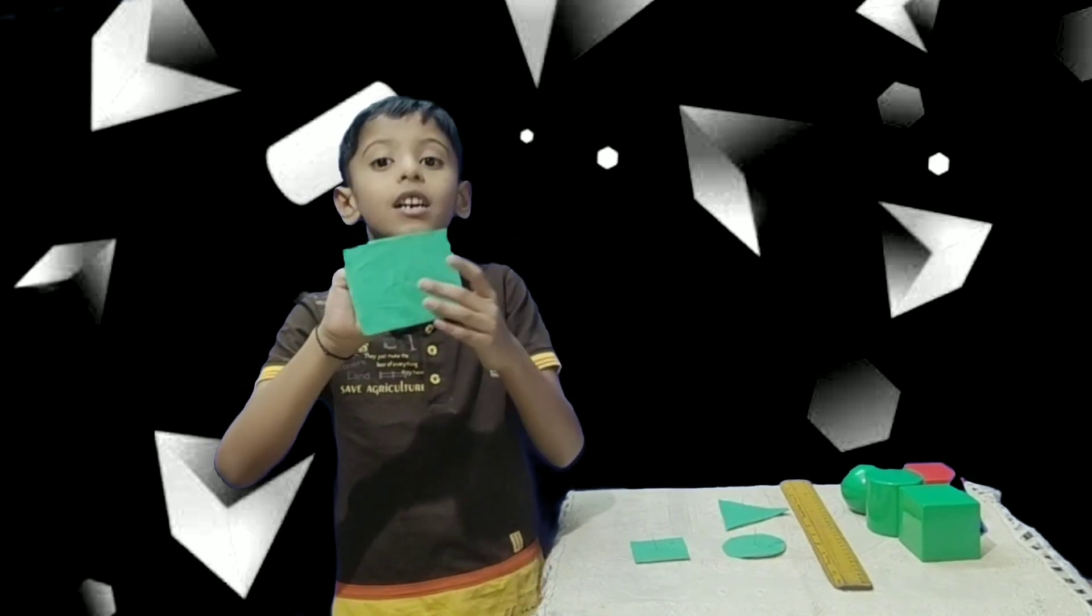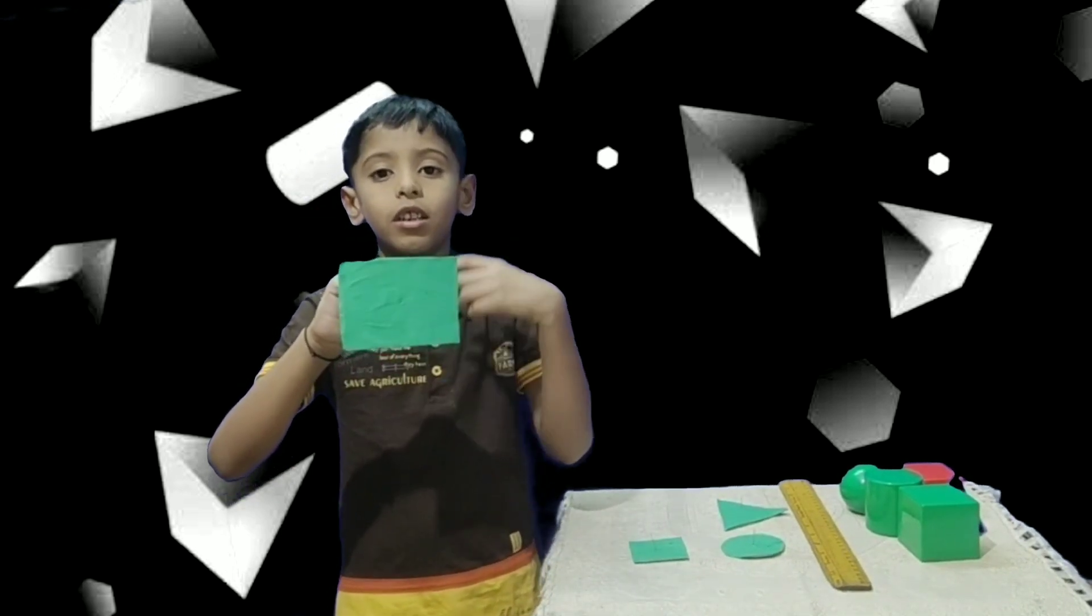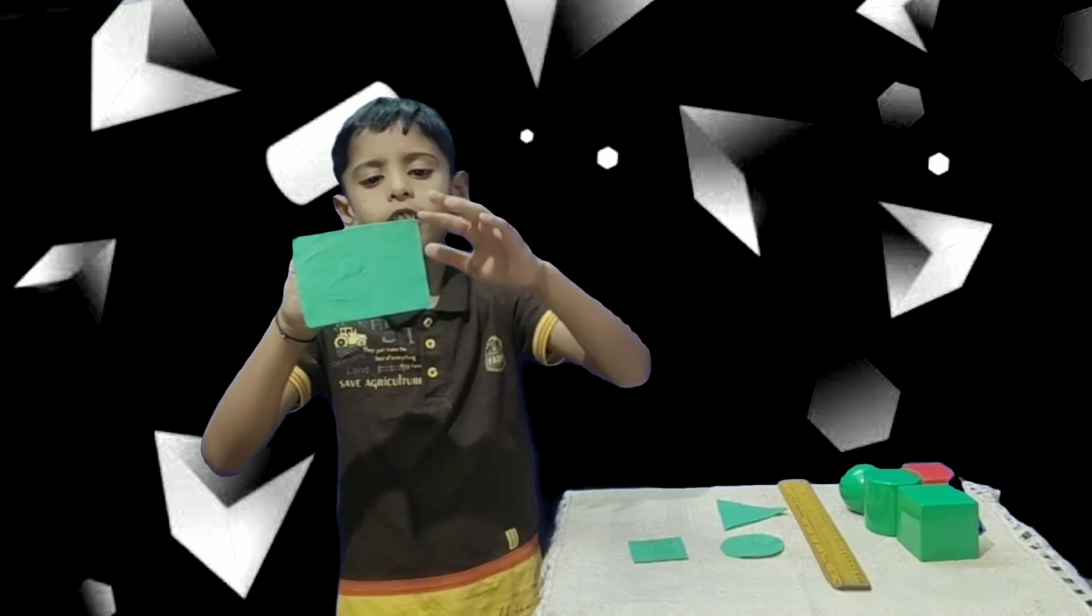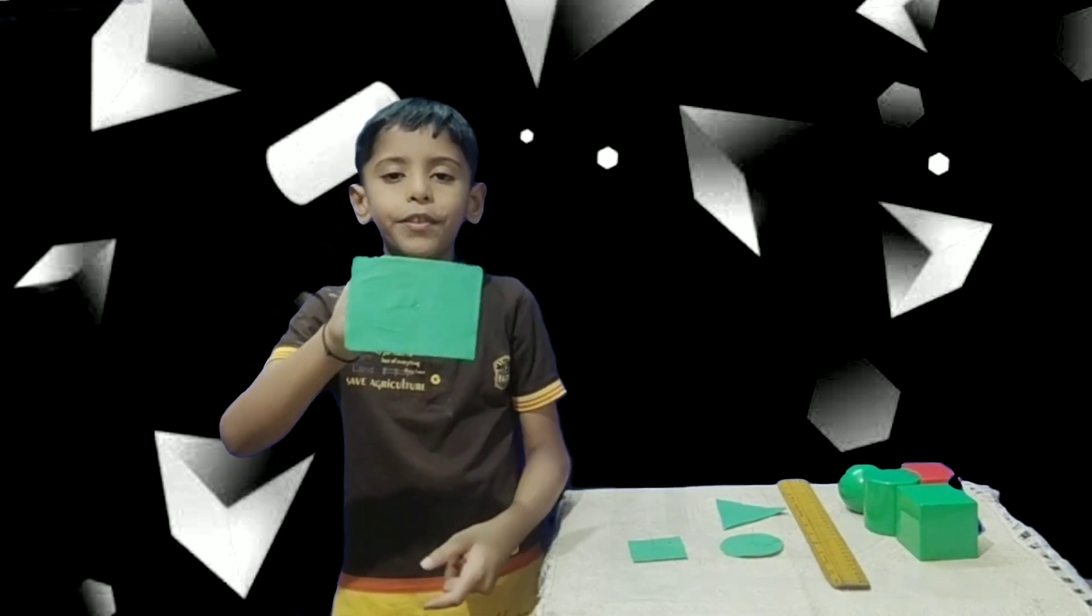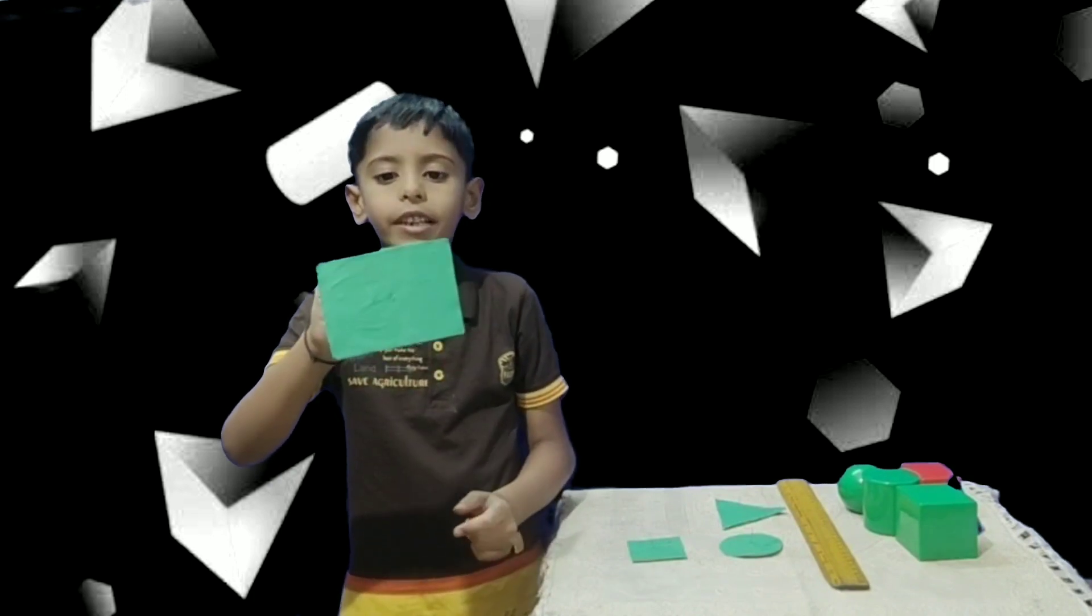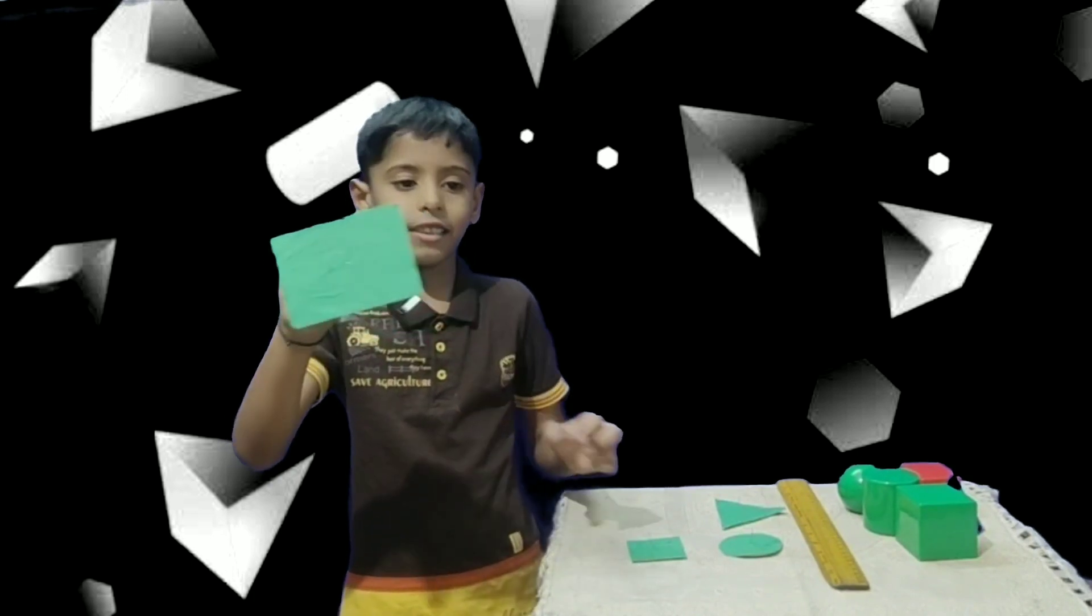It has four sides. Now let's count its corners. One, two, three, four. It has four corners. The rectangle has four sides and four corners.